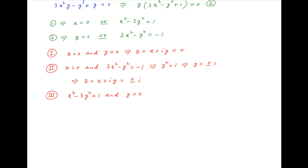The third possibility is that x square minus 3y square is equal to 1 and y is equal to 0. And this implies that x square is equal to 1, or x is equal to plus or minus 1. Therefore z, which is equal to x plus iy, is equal to plus or minus 1 in this case.